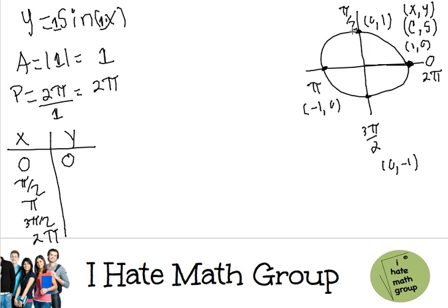When you are in pi over 2, the y value is just 1. When you are on pi, the y value is 0.